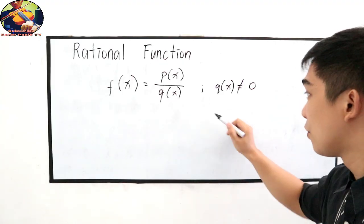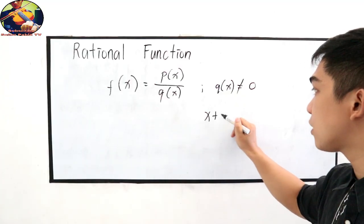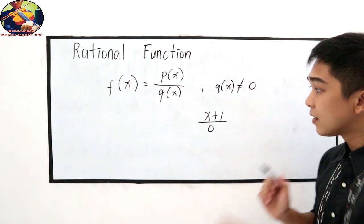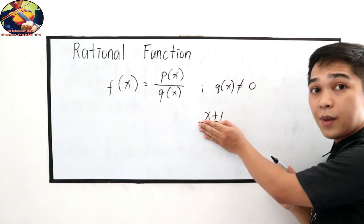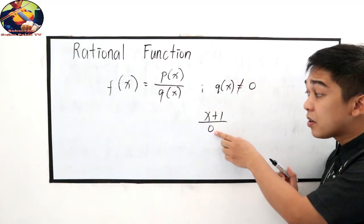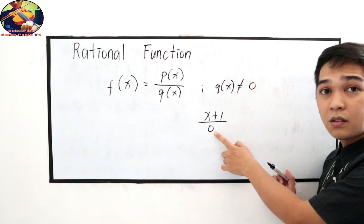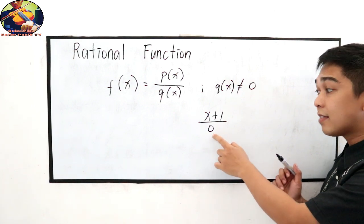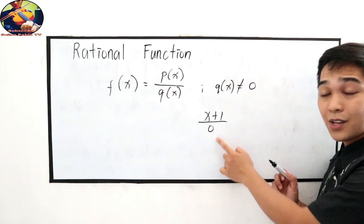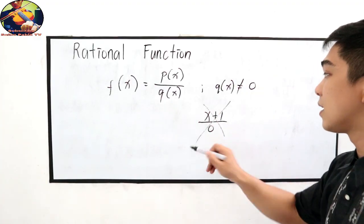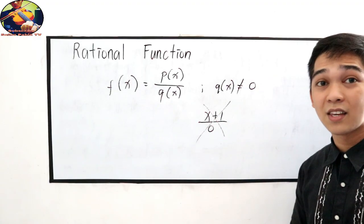Let's say we have (x+1)/0. Ayan. Yung numerator natin, walang problema, polynomial siya. Pero sa ating denominator, 0 siya. Alam natin na bawal tayo magdivide ng 0, so hindi na siya ngayon nagiging pasok sa ating condition.